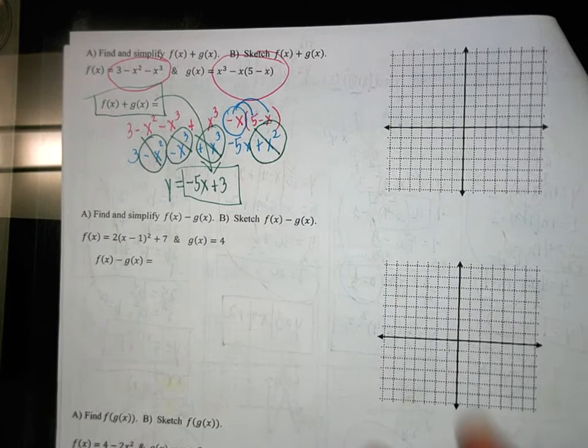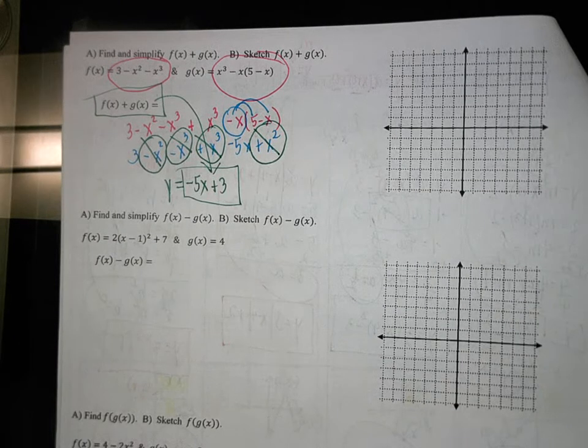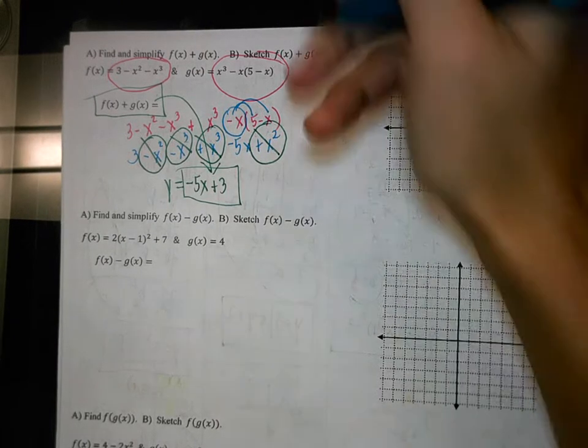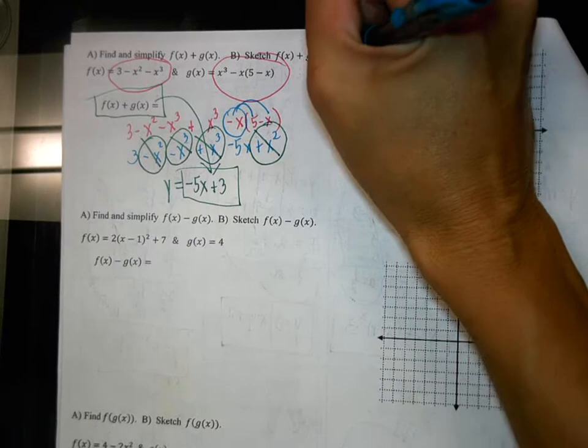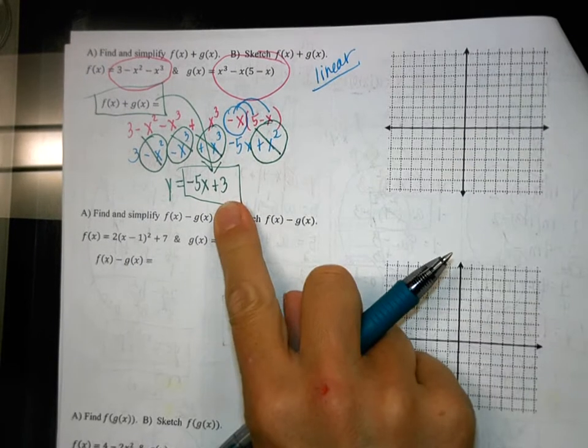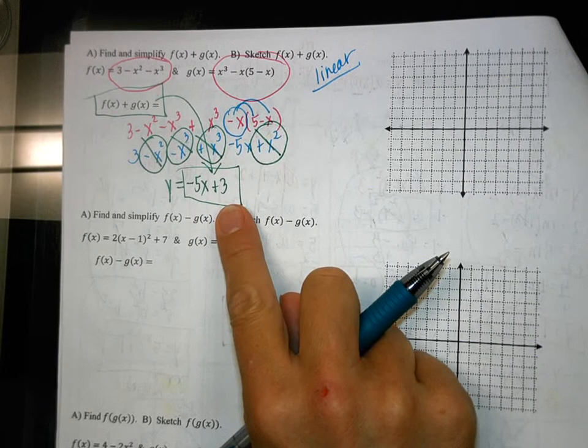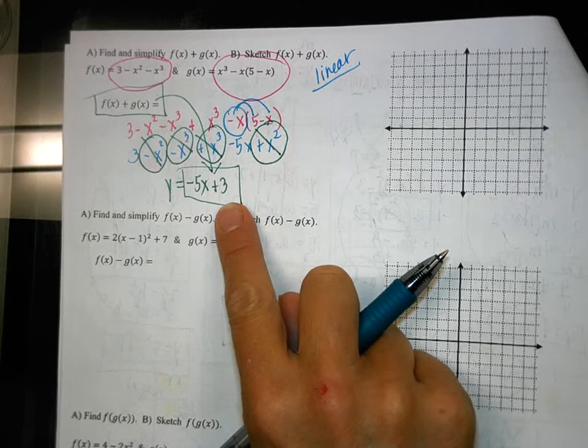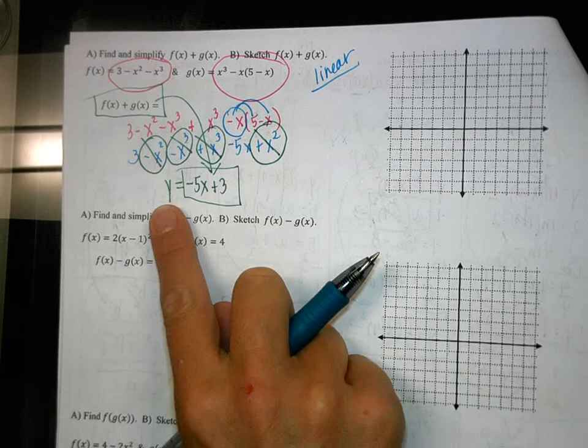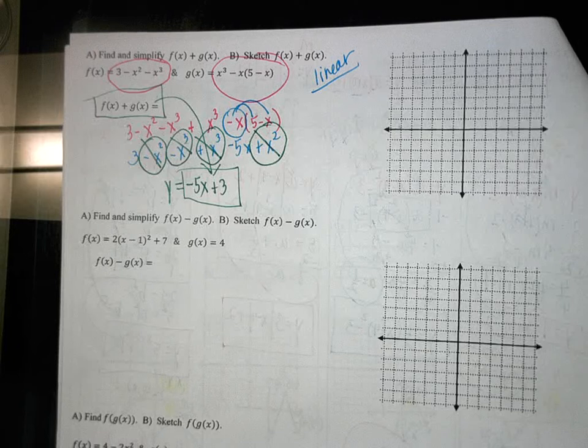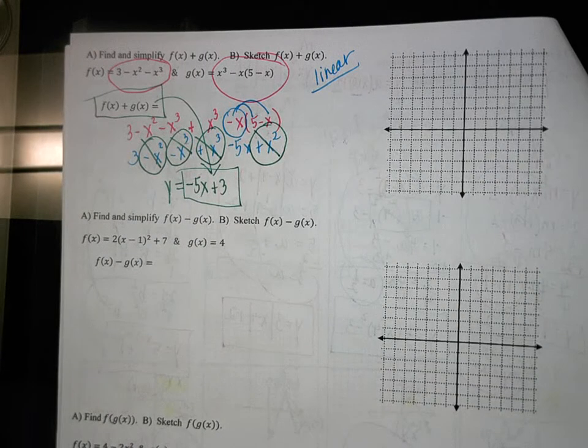So what type of function is this? Very good, it ends up being a linear function. And how do I know that this is a linear function? Yeah, good, there's no exponents. There are no, there's just an x and a y. So anytime you just have plain x's and plain y's like that, it's going to be linear.